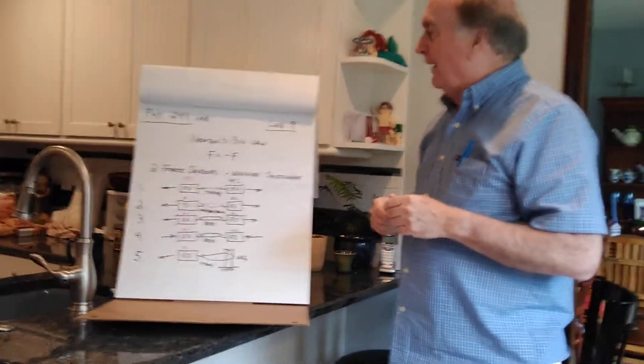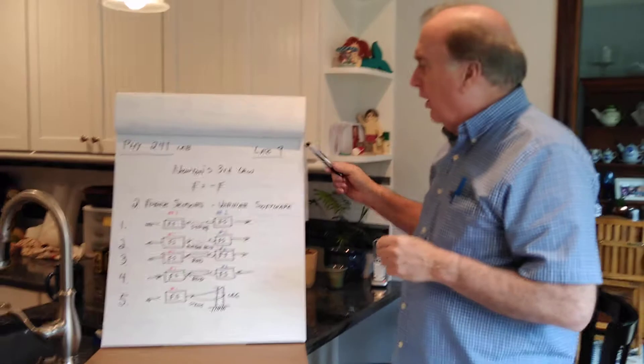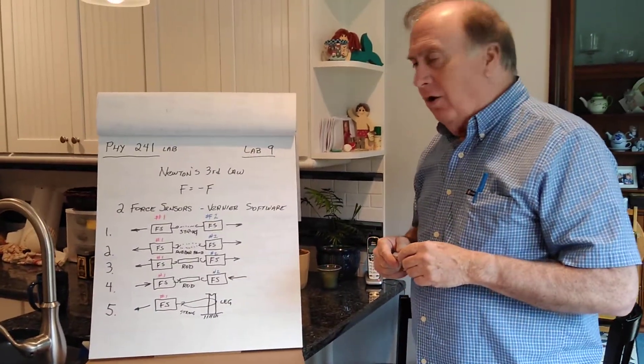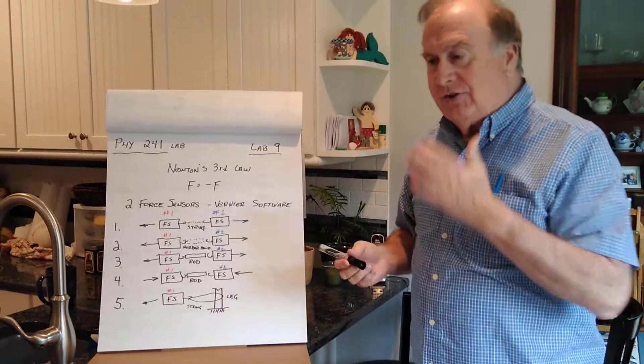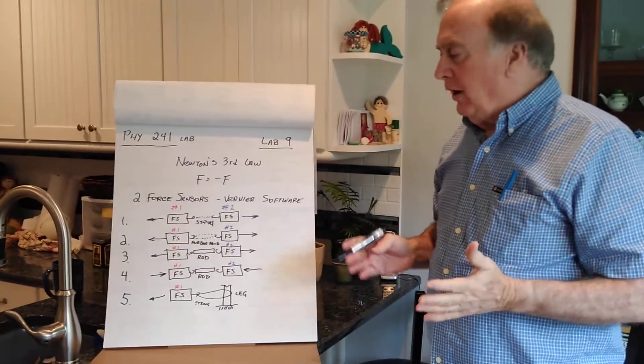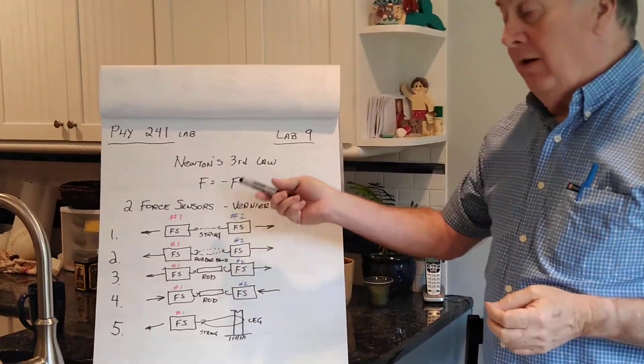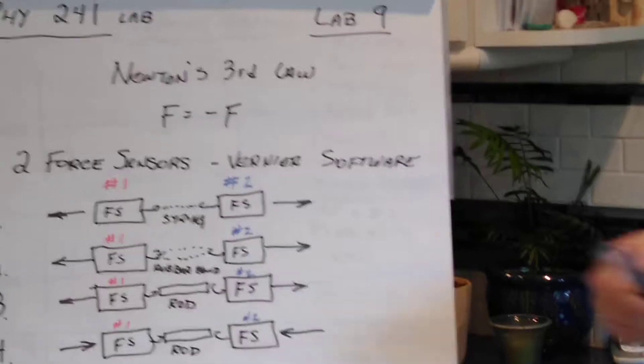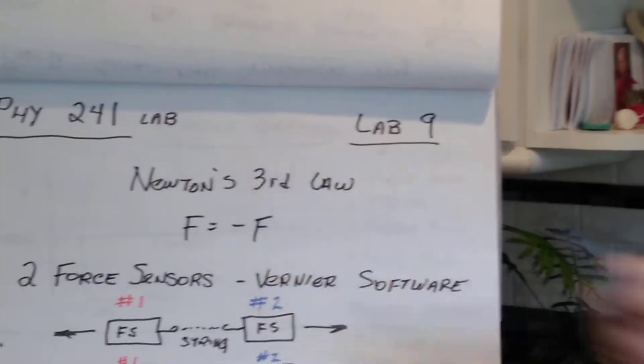This is Physics 241 Lab, lab number 9. In today's session we're going to cover Newton's Third Law, which says simply that for every action there's an equal and opposite reaction. In layman's terms, F equals minus F.